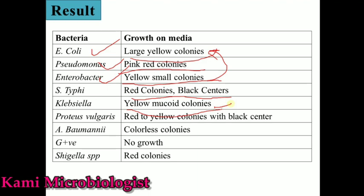Klebsiella has yellow colonies but the colonies will be mucoid, unlike E. coli and Enterobacter. Proteus vulgaris produces red to yellow colonies with black centers — similar to Salmonella type, but the colony color is red-yellow. Acinetobacter baumannii produces colorless colonies. Gram positive bacteria will have no growth on this media due to the presence of sodium deoxycholate. Shigella produces red colonies.